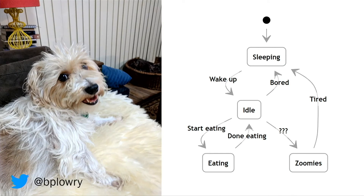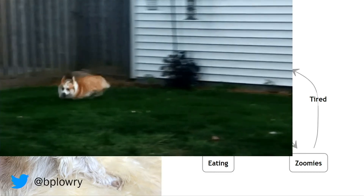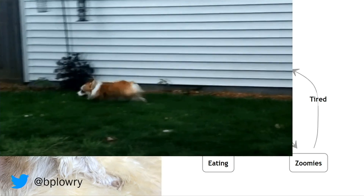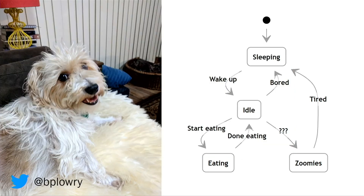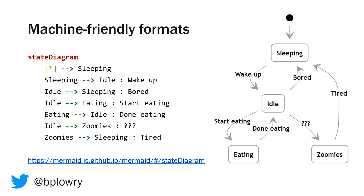You can model anything — user interfaces, business rules, or dogs. This is my dog. My dog does four things: my dog sleeps, my dog is idle, it eats, and it's got this thing called zoomies. If anyone has a dog, they know what that is — running around randomly in circles. I don't know what causes a dog to go from idle to zoomies, that's why I put question marks there. But I know that once it's been in zoomies, it goes straight to bed.